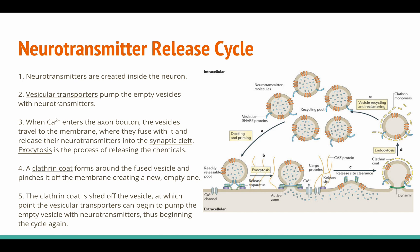In step one, the neurotransmitters are created inside the neuron. Step two, the vesicular transporters pump the empty vesicles with neurotransmitters. Step three, when calcium enters the axon bouton, the vesicles travel to the membrane, fuse with it, and release their neurotransmitters into the synaptic cleft — a process called exocytosis. Step four, a clathrin coat forms around the fused vesicle and pinches it off the membrane, creating a new empty vesicle. In the final step, the clathrin coat sheds off the vesicle, at which point the vesicular transporter begins pumping it with neurotransmitters again, thus beginning the cycle anew.